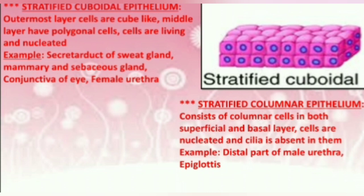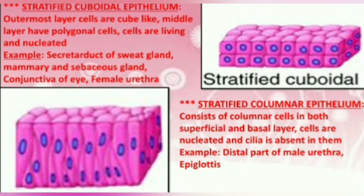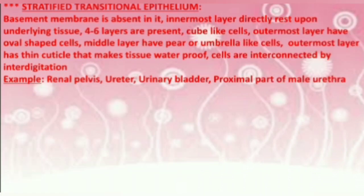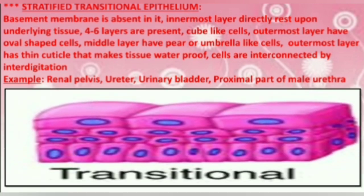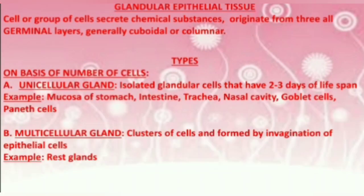In stratified columnar epithelium, cells are nucleated and cilia is absent. Number four is the stratified transitional epithelium: the basement membrane is absent and the innermost layer rests directly upon the underlying tissue. This can be seen in the renal pelvis, ureter, urinary bladder, etc.